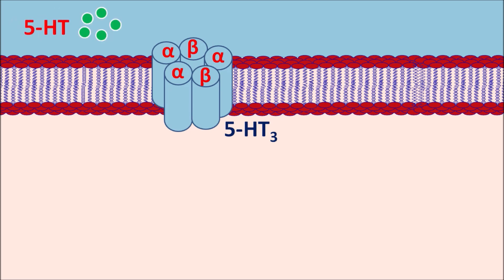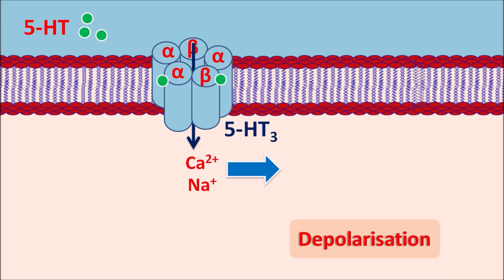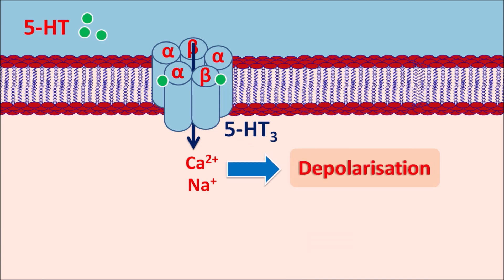When 5-HT is released from the enterochromaffin cells, it acts on the 5-HT3 receptors located at the CTZ, stimulating them. When these receptors are activated, they open ion channels, releasing calcium as well as sodium. This calcium and sodium are responsible for depolarization of the postsynaptic membrane, which results in the stimulation of emesis — producing nausea and vomiting.